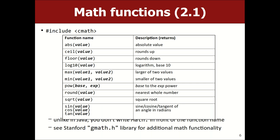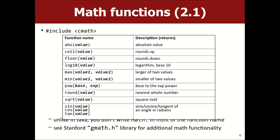There's a math library with useful mathematical functions. If you include cmath, you can use pow(base, exponent), abs, and similar functions. Most take doubles as parameters, but you can pass ints and they'll convert. In Java you'd say Math.pow or Math.abs — here you just say pow or abs. All these functions are in the std namespace, so without 'using namespace std' you'd need to write std::abs and std::pow.